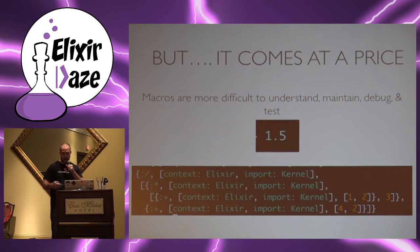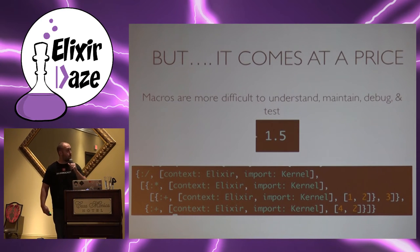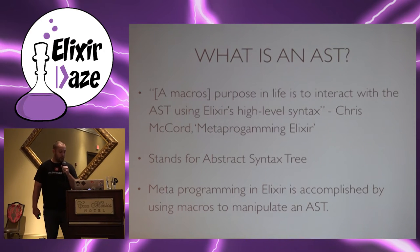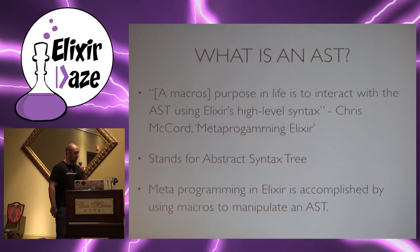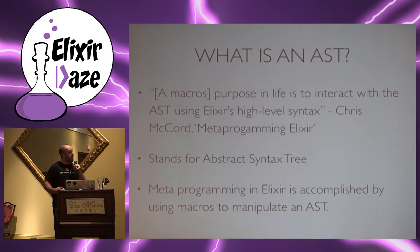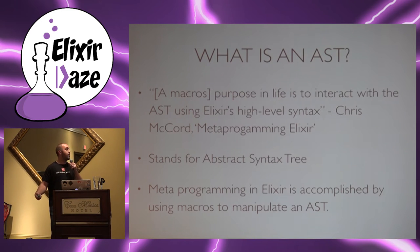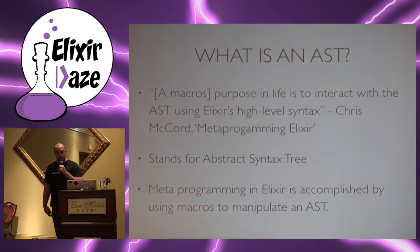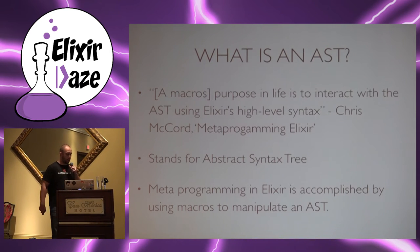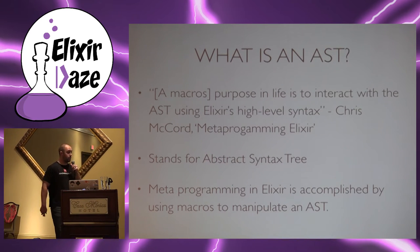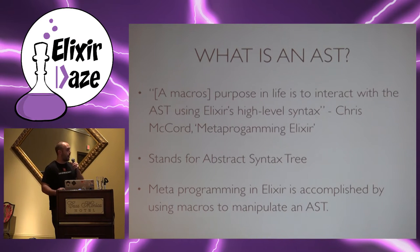This is an AST — abstract syntax tree — and before we can really talk about macros, we need to know more about the AST. In Chris McCord's book, Metaprogramming Elixir — which is awesome, I suggest you read it if you have any interest in metaprogramming or writing a library — macros' purpose in life is to interact with the AST using Elixir's high-level syntax. That's how we metaprogram: we manipulate ASTs at runtime. The cool thing is ASTs are written in Elixir, so it's really easy to work with them.